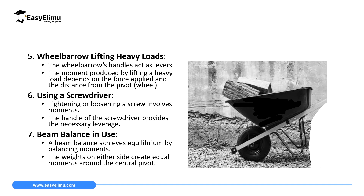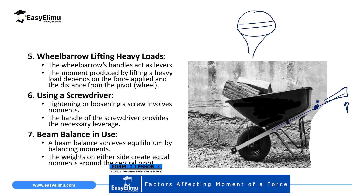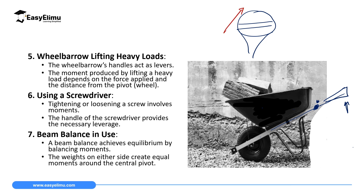A wheelbarrow lifting heavy loads is another example where the handles act as a lever. If you hold the handles far away from where the loads are, you require very little energy because you are increasing the distance from the pivot. But if you hold close to where the loads are, you need a lot of energy to lift the wheelbarrow. Using a screwdriver also causes a turning effect — as you rotate one side, the other side turns, and we will discuss this further when covering couples or anti-parallel forces.